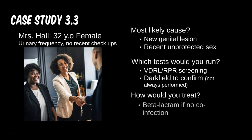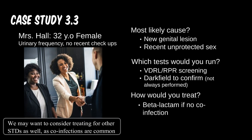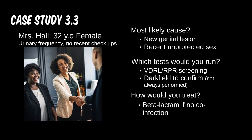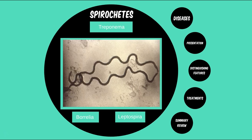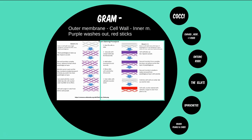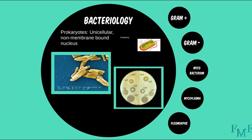Hopefully these cases have provided some insight into the clinical considerations every practicing physician must weigh. These are actually very straightforward and easy to manage cases — in real life, it's not always the case. Though we briefly discussed how primary Treponema infections are usually sensitive to penicillins, this isn't always the case for other stages. In the next and last video for this module, we'll review the antibiotics to consider for each of these three genera.